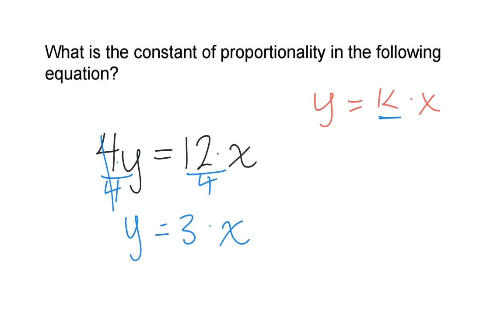We're left with the form y equals k times x. Now we're multiplying the x value by 3 to get the y value, so the k value is 3. The constant of proportionality in this equation is 3.